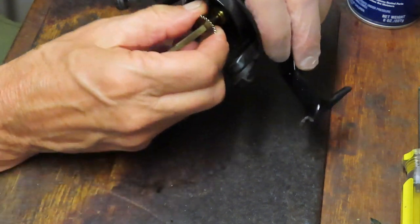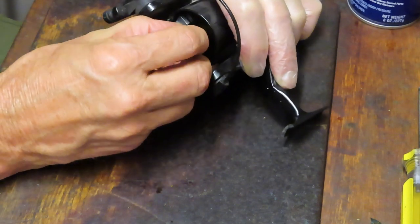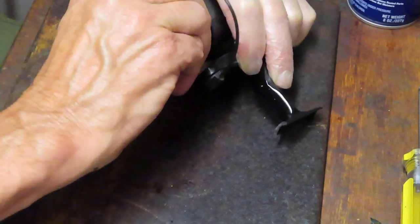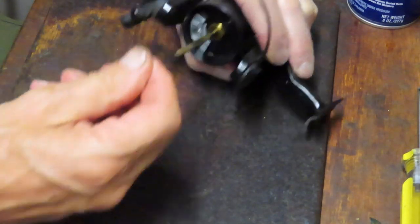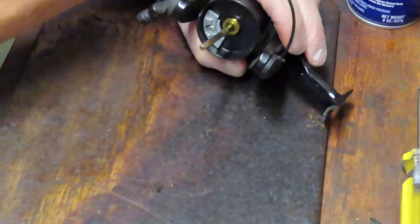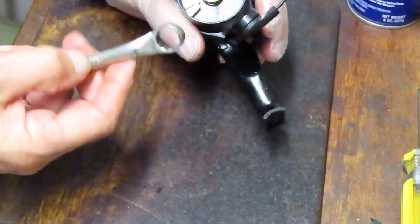Then the click rotor here should pull off. Sometimes my hand strength isn't what I want it to be, but if you just pull up on that it will come off eventually. And then let's take the rotor off as well.